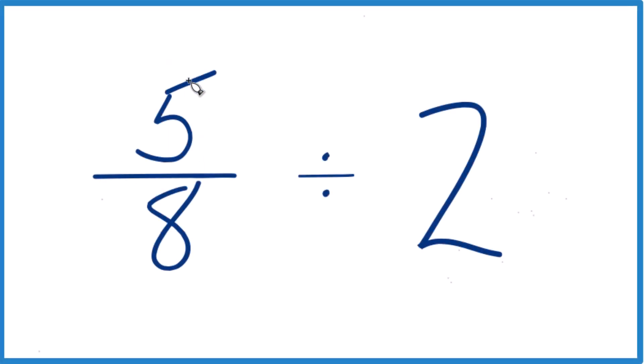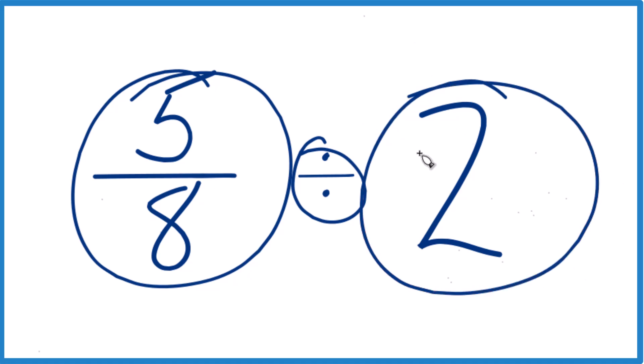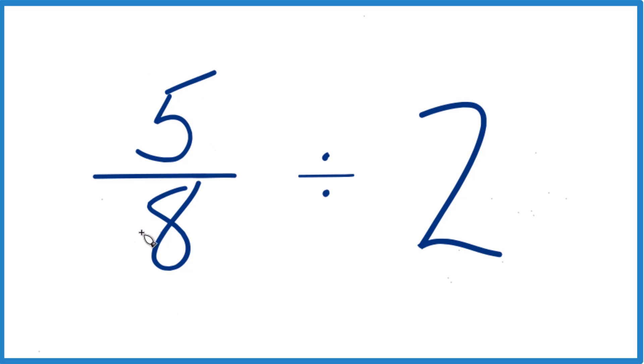Let's figure out what we get when we take 5 eighths divided by 2. So first off, 5 eighths, that's less than 1. This is a number less than 1.